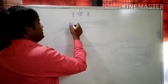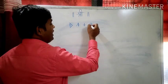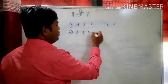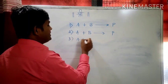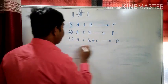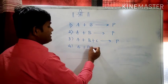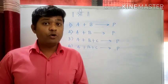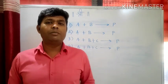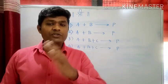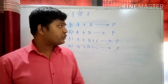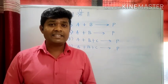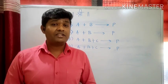Let us take four examples. First: A plus B gives product P. Second: A plus B gives product P. Third: A plus B plus C gives product P. Fourth: A plus B plus C gives product P. So friends, I have written four reactions here and you have to predict the molecularity of the reaction. If you think you can directly answer just by looking at the reactions — that answer is wrong.